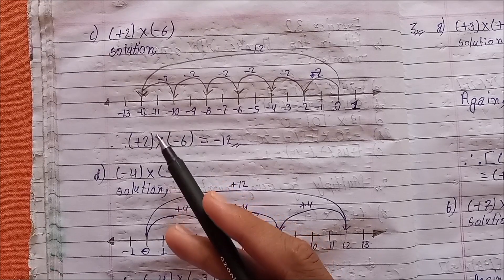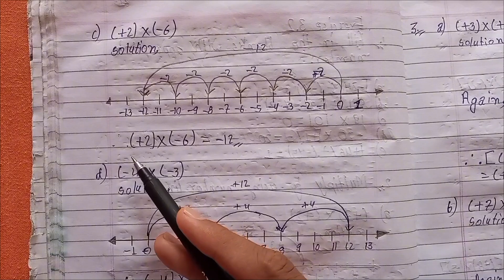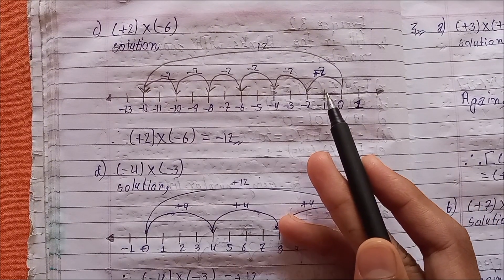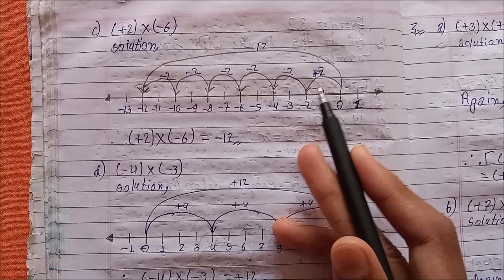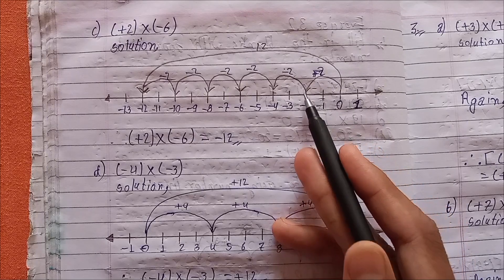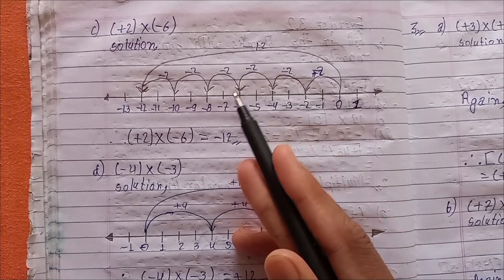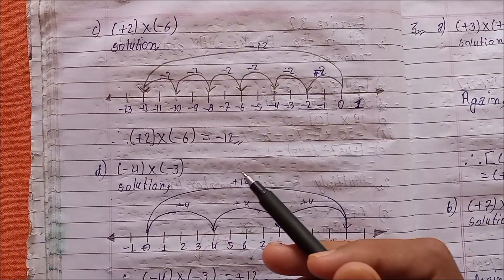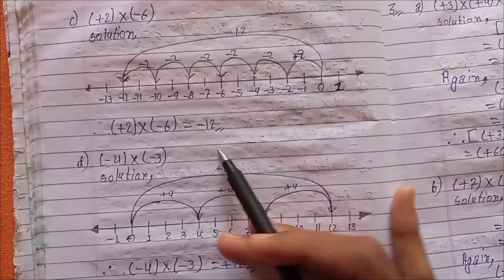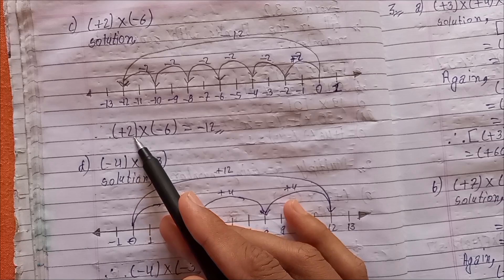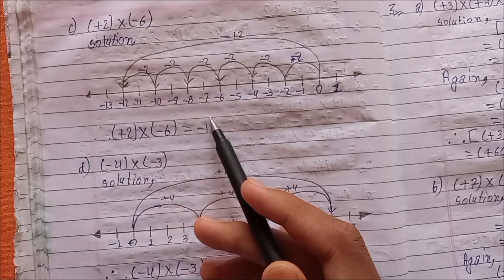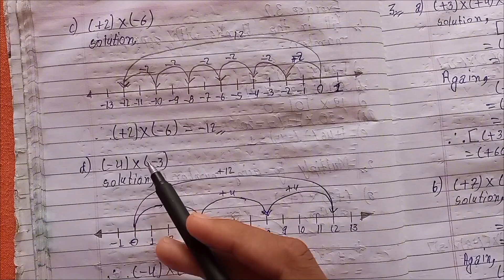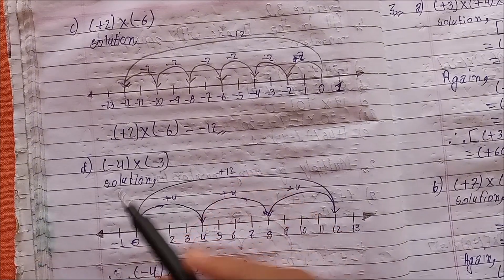Continuing: moving minus 6 steps and plus 2 steps on the number line, marking positions — plus 2, plus 2, plus 2, plus 2, plus 2, plus 2 — six times. Therefore, plus 2 multiplied by minus 6 equals minus 12. (d) minus 4 multiplied by minus 3. Solution: